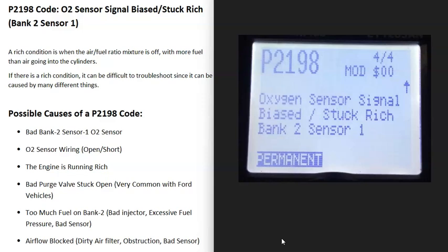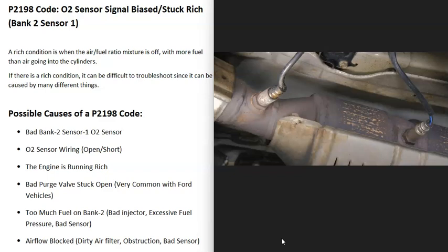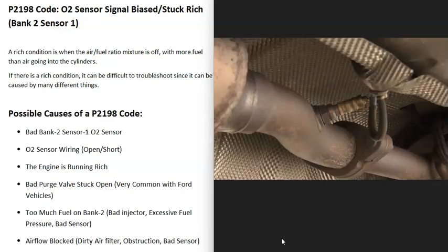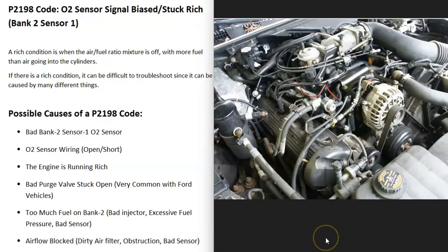What are some possible causes of a P2198 code? The first thing that could cause this is that the O2 sensor has gone bad and is reporting incorrect information to the computer. The first thing to do is test that Bank 2 Sensor 1 oxygen sensor and ensure it's working correctly. Also keep in mind that anything wrong with the wiring—an open, short, or bad connection—can cause the same symptoms as a bad sensor.